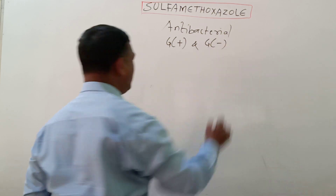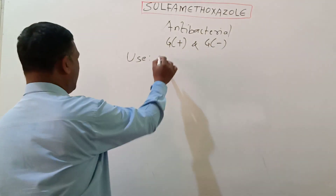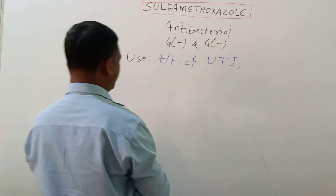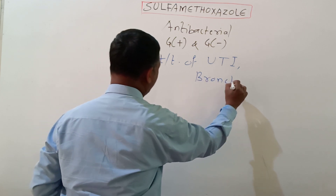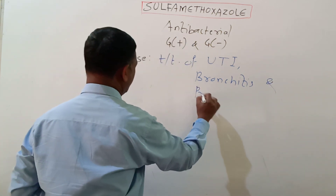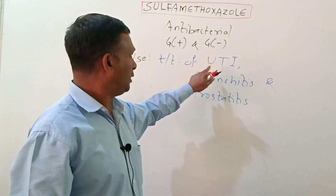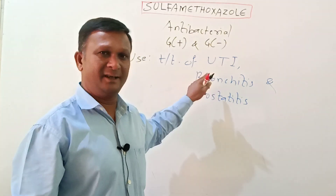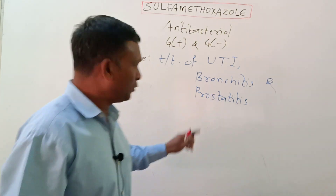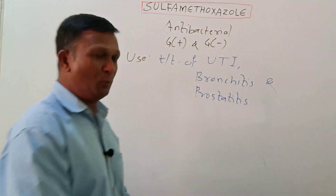This drug is used for treatment of urinary tract infection, bronchitis, and prostatitis. UTI is the inflammation of the urinary tract, bronchitis is inflammation of the bronchioles, and prostatitis is inflammation of the prostate glands. In all these disease conditions, sulfamethoxazole finds its use.